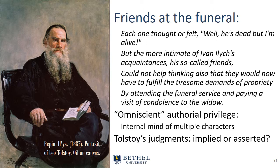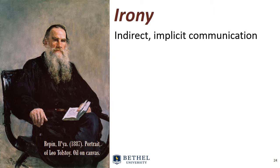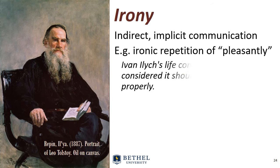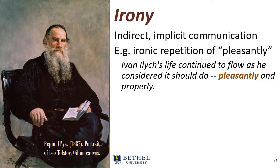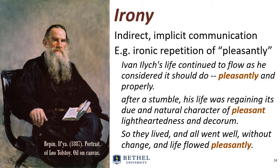But what about the judgments made here? Are they implied or are they directly asserted? Tolstoy has much to say about these characters, but he says it, for the most part, indirectly, implicitly through irony. For example, we get these expressions of moments in Ivan Ilyich's life that seem to be pleasant, pleasant, pleasant. And that repetition leads us to ask: yes, but what's really going on underneath the surface?